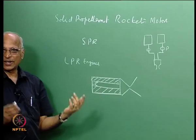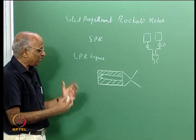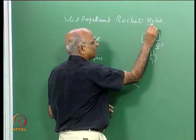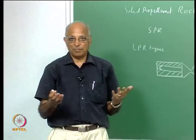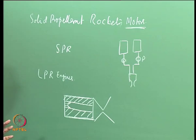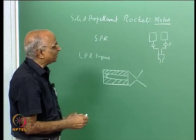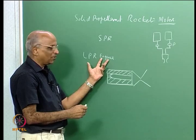Because a solid propellant rocket has no moving parts, it is referred to as a motor. In fact, the case itself is referred to as a motor case. Whereas a liquid propellant rocket, considering it has moving parts, is referred to as an engine. With this introduction, let us go back and see where we were last time. We talked about igniters, so let me briefly go through what we covered.